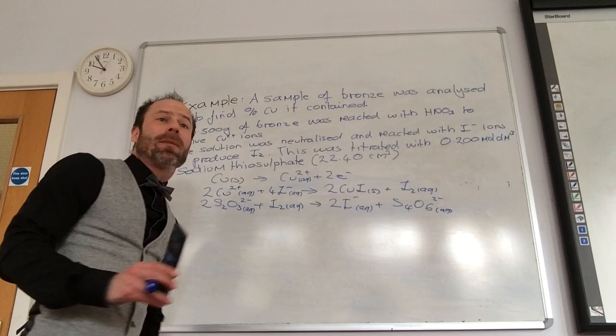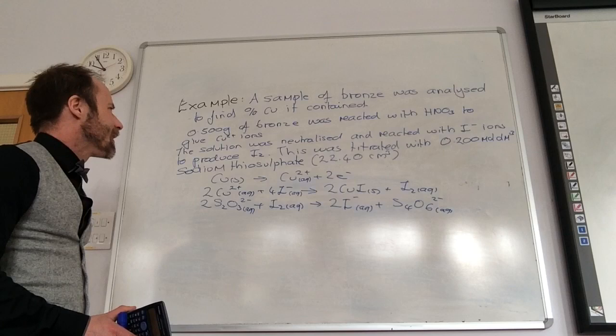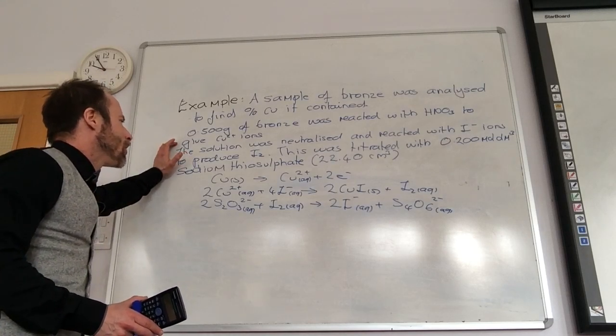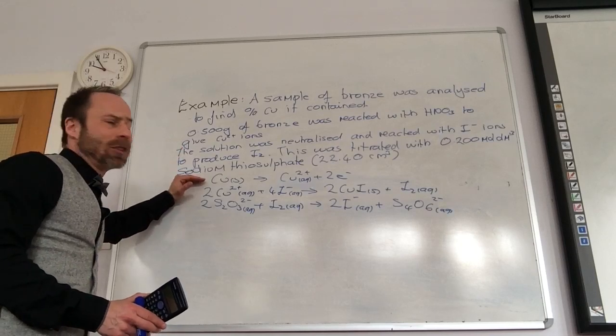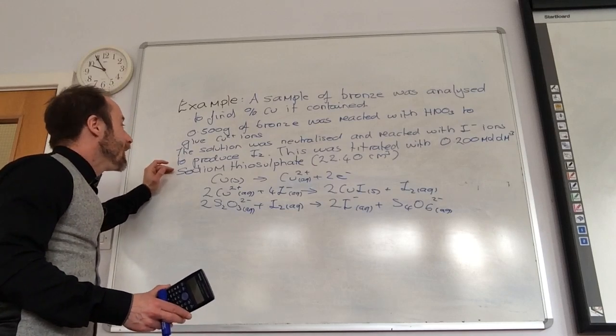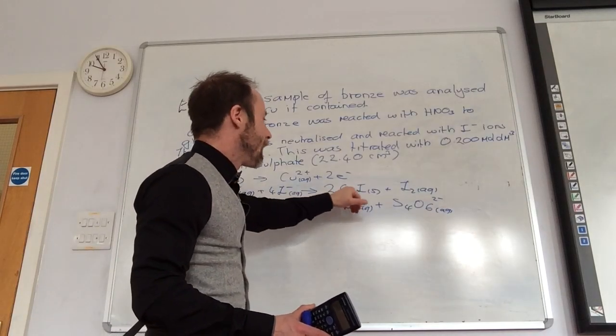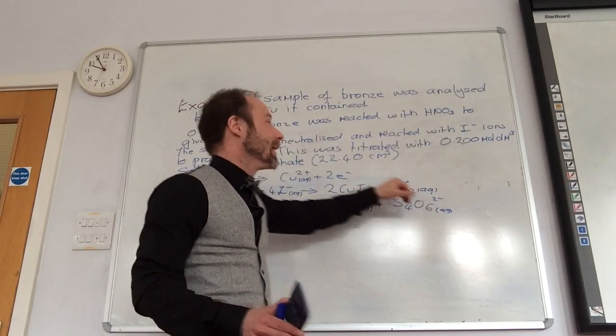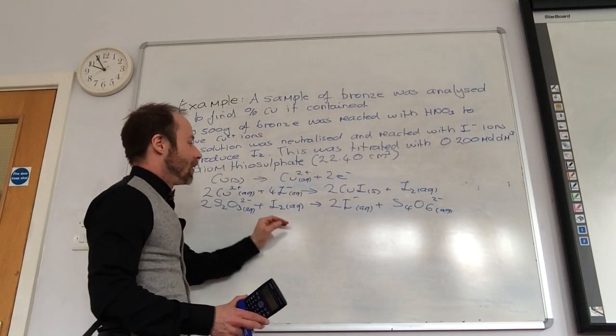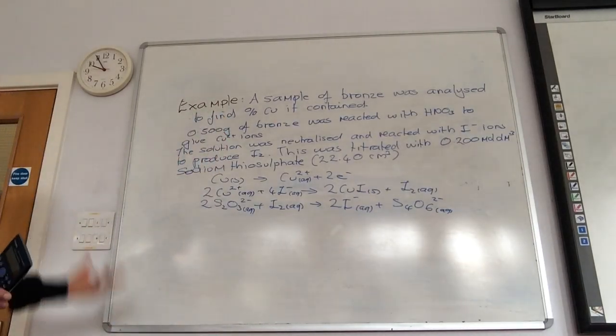Okay, so slightly more complicated example, but the main thing is keep calm and just work your way through it. So I've got some coins, and I want to find out how much copper it contains. So I took 0.5 grams of it, and reacted with nitric acid to give copper 2 plus ions. That's this equation here. So I'm taking copper to produce copper 2 plus aqueous. The solution was neutralized, and reacted with iodide ions to produce I2. That's this equation here. So copper 2 plus, doesn't matter about that, but it's iodine, and that's what I'm interested in. I then reacted that with sodium thiosulfate by that titration. Okay, so those are my three equations, and I just need to find out where do I always begin?